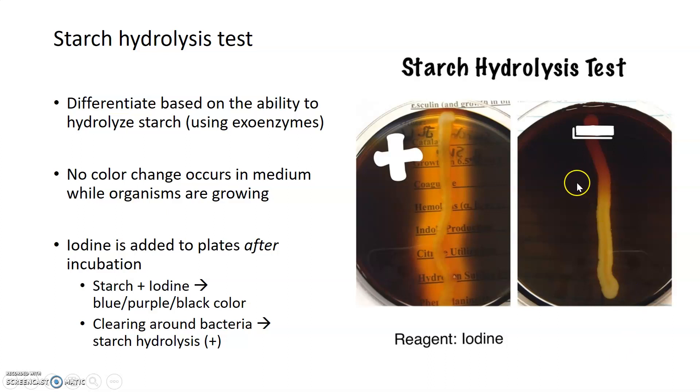Just to show you another example of that, this clearing is a little bit even more evident around the bacterial lawn. Once again, bacteria can grow on both starch positive and starch negative plates, right? So you can see the lawns here. But what you're really looking for, for a positive or negative, is that clearing around the bacterial lawn. That clearing here would indicate this organism is starch positive and this one on the right is starch negative.